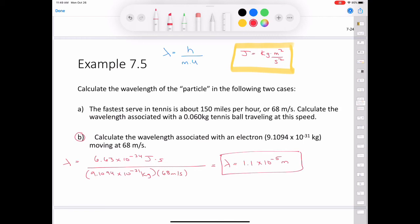This wavelength is in the infrared region. This calculation shows that only electrons and other subatomic particles have measurable wavelengths.